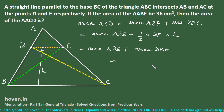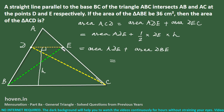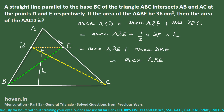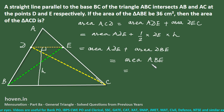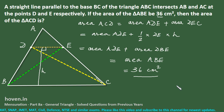Therefore, area ACD equals area ADE plus area DBE. Now, area ADE plus area DBE gives us the complete triangle ABE. So area ACD equals area ABE, which has been given as 36 square centimeters. That is the answer. Let us move to our next question.